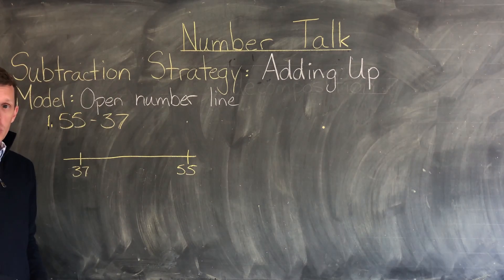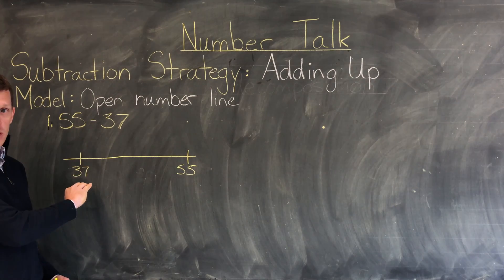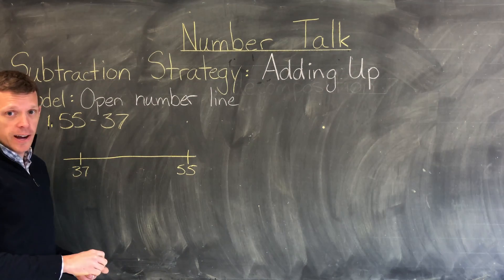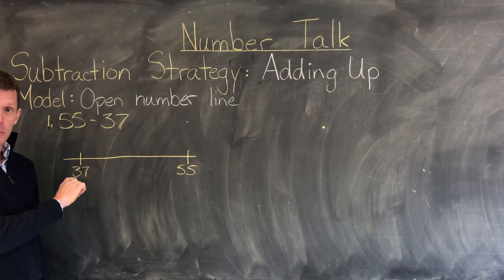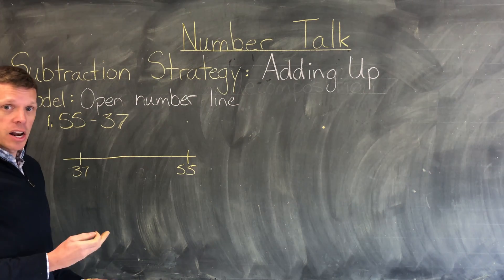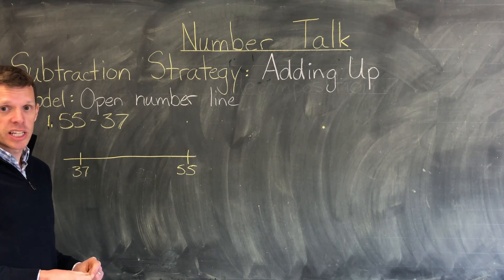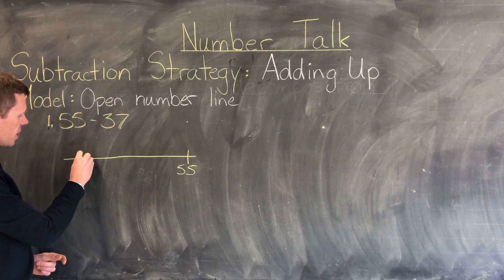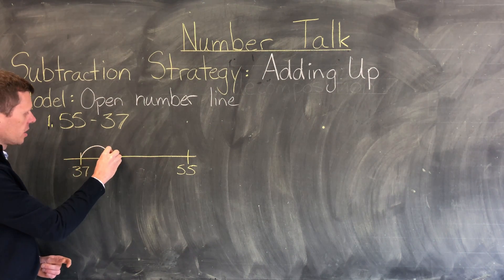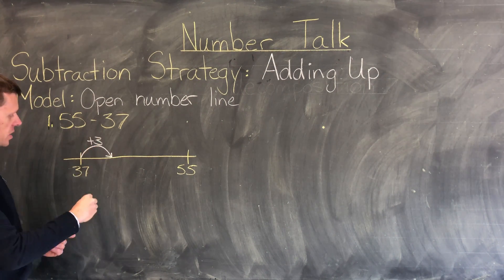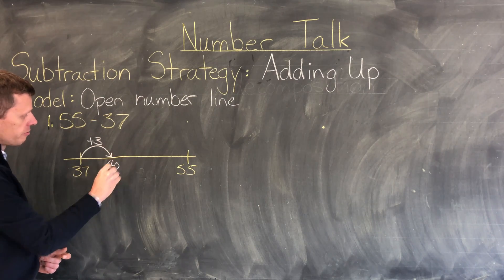Now what I'm going to do is start making some jumps going from 37 and adding up to 55. So 37, I'm looking for my friendly numbers and a number that's close to 37 that is friendly is of course 40. So I'm going to make a small jump here of 3 and that's going to get me to 40.